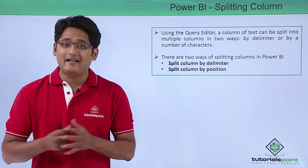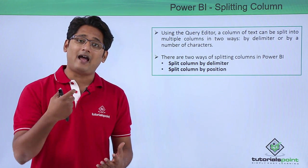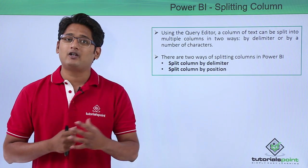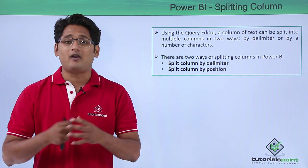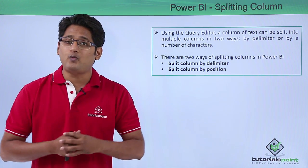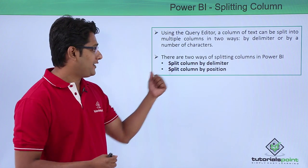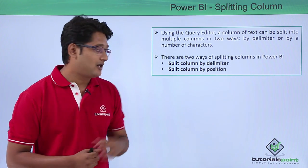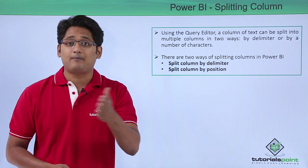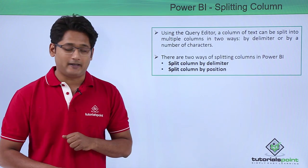In order to split this column in Power BI Desktop, we have to use the Query Editor option. In the Query Editor we can split columns very easily. There are two ways: we can split the column by a delimiter, or we can split the column by position, deciding the exact position where the split should happen.